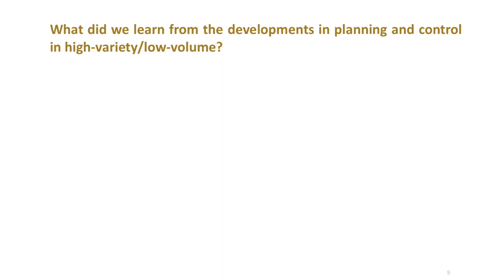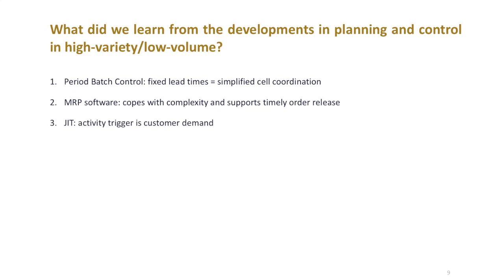So what did we learn from the developments in planning and control in high variety and low volume? Period batch control taught us the value of fixed lead times of cells and how this simplifies the coordination between the cells. MRP software is able to cope with complex product structures and products which use similar items. It supports the timely release of orders for these items. Just-in-time taught us that external and internal customer demand should be the trigger to start each manufacturing activity.